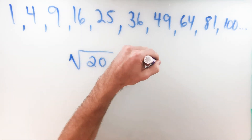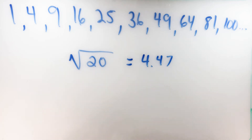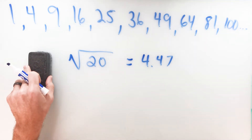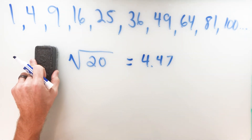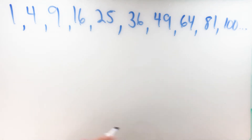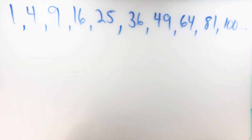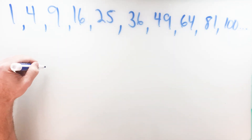Punching it into a calculator gives you something like 4.47-something. In a lot of cases it is beneficial to simplify the radical, similar to how we reduce fractions to their lowest possible terms. It's effective for communicating your numbers. So what does it mean to simplify a radical? I'm going to show you two different methods today. Both methods rely on prime factorization to get to the simplest terms. We'll go back to the square root of 20.